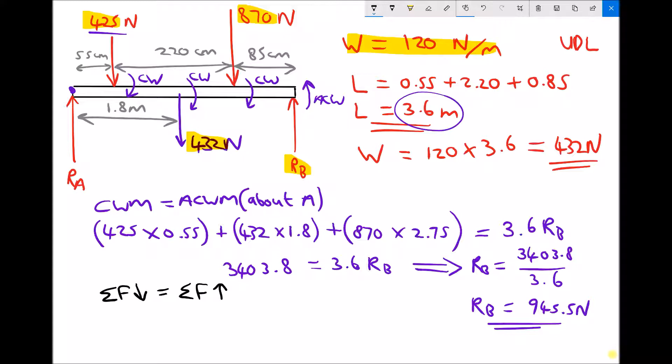And once again, take care here, because we actually have three forces acting downwards. We have a 425 Newton force, we have a 432 Newton force, which is the weight, and we have an 870 Newton force. And then we have two forces acting upwards. We have RA, which is what we're trying to find, and we have RB, which we've just calculated, 945.5.